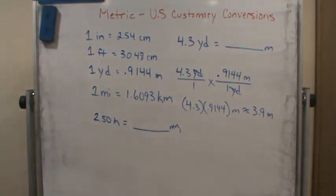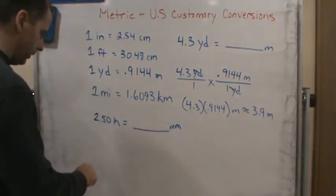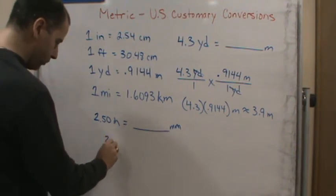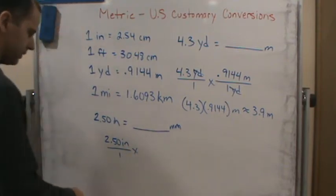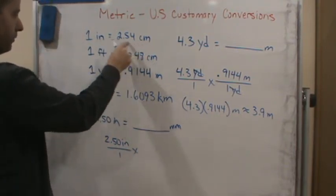So if we want to change this to millimeters, then again we just use the appropriate conversion factors. So we do 2.50 inches over 1 times. We can go to centimeters by using this conversion factor right here.